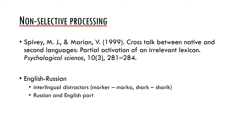Importantly, there were two conditions. In one condition, an interlingual distractor was used. In the case of the sentence "put the marker below the cross," there was also a stamp on the board, which is called marka in Russian. This was called the interlingual distractor present condition. In a control condition, there were other things on the board whose name in Russian did not resemble the name in English. The authors always measured the proportion of trials in which participants looked at the distractor objects in the display — for example, on the stamp — when they were told "put the marker below the cross."